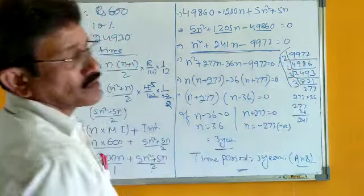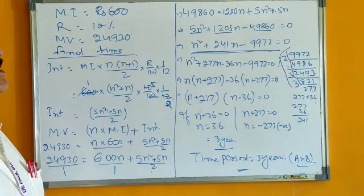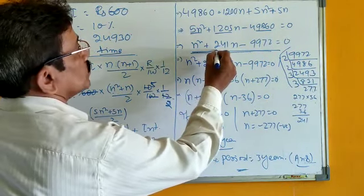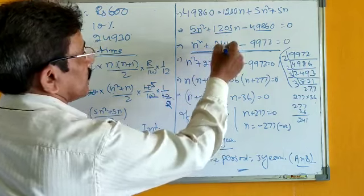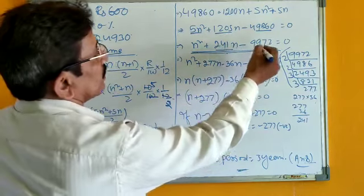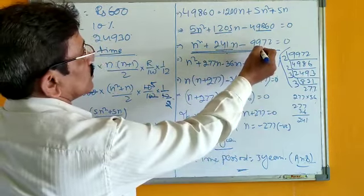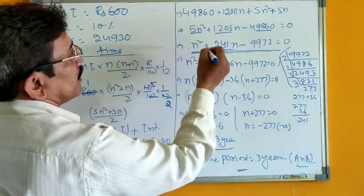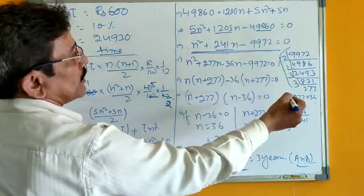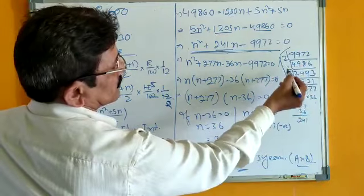Either you can use formula method or factorization method. Middle term is 241N, break it. As per our method, coefficient of N square multiply with constant term. Find the factors, prime factors, like this.